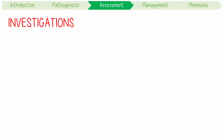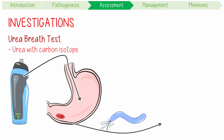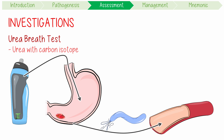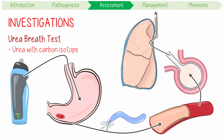You can investigate for H. pylori infection using three main methods. First, urea breath testing: patients are given a drink with urea labelled with a carbon isotope. If the bacteria are present, their urease enzyme breaks it down into labelled bicarbonate, which is absorbed into the blood and exhaled as labelled CO2, measurable in a breath test. This has greater than 95% sensitivity and specificity.